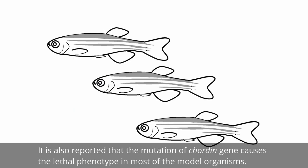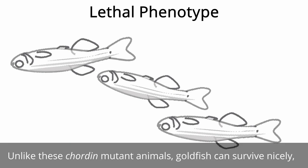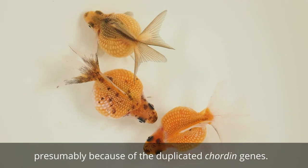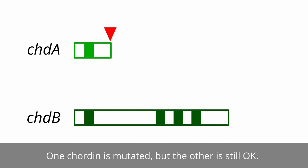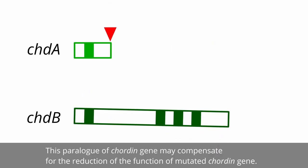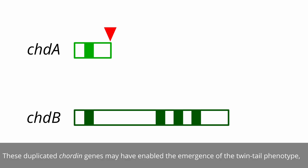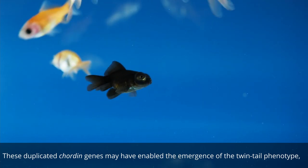It is also reported that mutation of the caudin gene causes a lethal phenotype in most model organisms. Unlike these caudin mutant model organisms, Goldfish can survive nicely, presumably because of the duplicated caudin genes — one caudin gene is mutated but the other is still functional. This paralogue of the caudin gene may compensate for the reduction of function of the mutated caudin gene, and these duplicated caudin genes may have enabled the emergence of the Twintail phenotype.